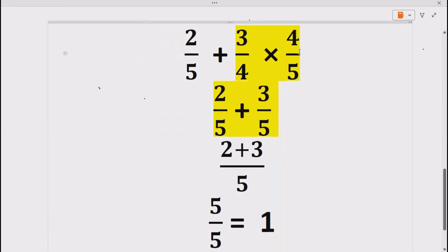So according to BODMAS or PEMDAS we have to do this multiplication. In the multiplication we know this 4 and this 4 will cancel out because in multiplication we can cancel out the cross terms.